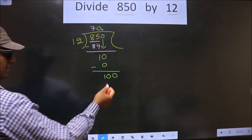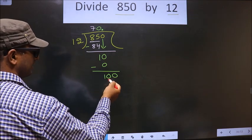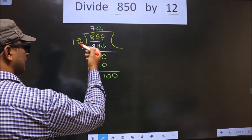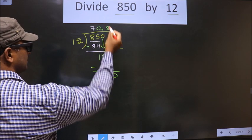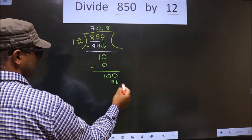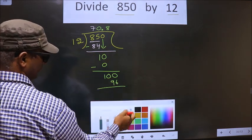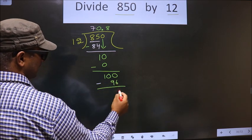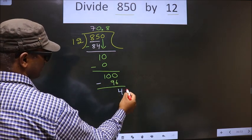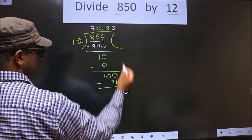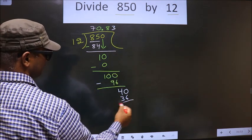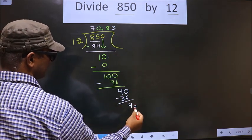Now here we have 100. A number close to 100 in the 12 table is 12 times 8, which is 96. So you subtract 100 minus 96, which is 4. Now you take 0. 12 times 3 is 36. Subtract, you get 40, and it goes on.